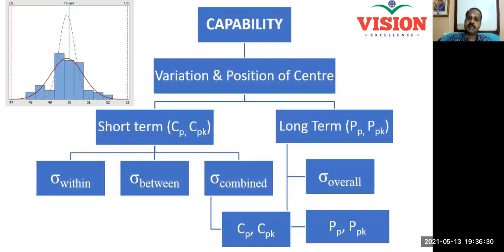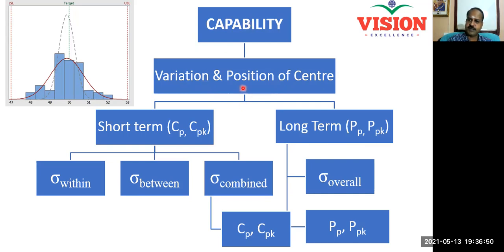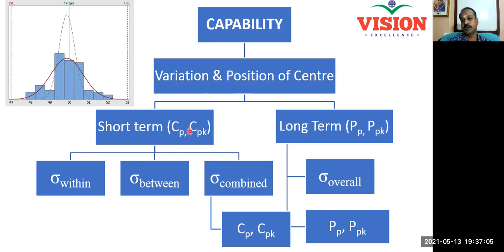Capability is actually a function of two things: one is the variation in the process, and another is the position of the process center with respect to the specification limit. If the variation is too high, capability will be low. If the process is shifted or off-target, that will also reduce the capability. This capability can be measured in two ways: one is short-term capability and another is long-term capability.